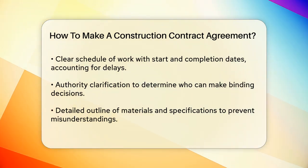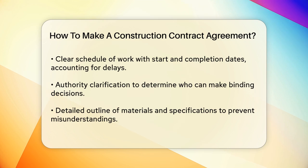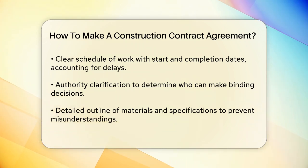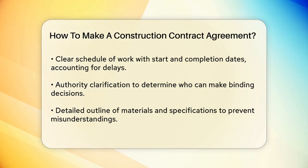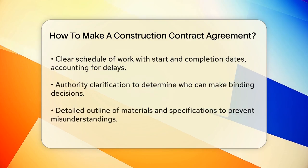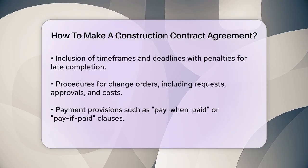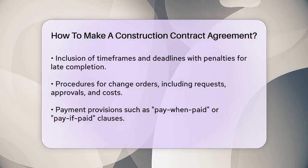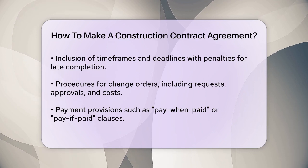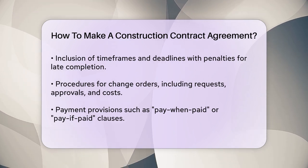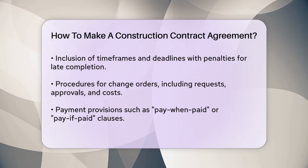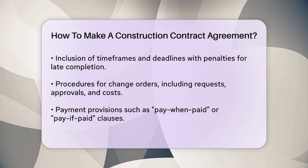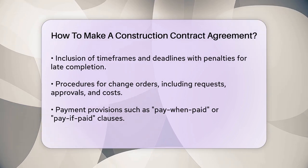Authority is another key aspect. With many people involved in a construction project, it's important to specify who has the authority to make legally binding decisions. This can save a lot of confusion and headaches down the line. Materials and their specifications should be outlined in the contract as well. If there are specific materials that the homeowner or builder insists on using, these need to be detailed in the contract to avoid any misunderstandings.